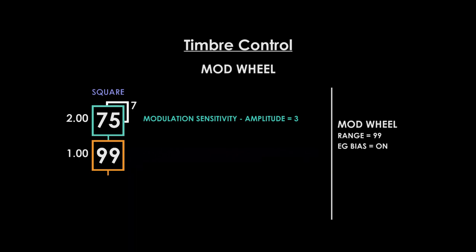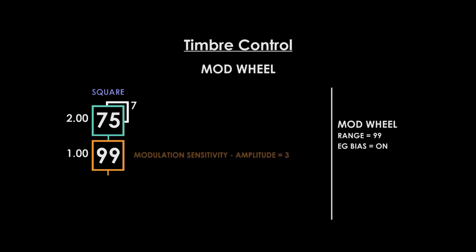Notice how it sounds like a filter as we increase and decrease harmonic content from our sound. If we applied this technique to the carrier we would control the overall volume, not the timbre. If we apply it to both carrier and modulator we control timbre and volume simultaneously. If the carrier sensitivity is a different value to the modulator's, the mod wheel will affect them differently according to those values.